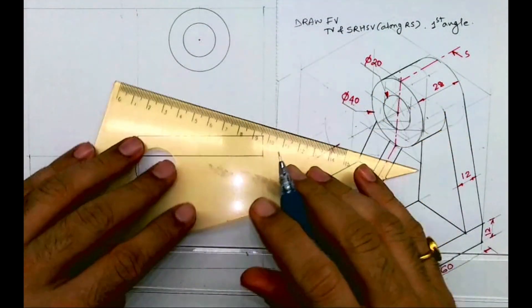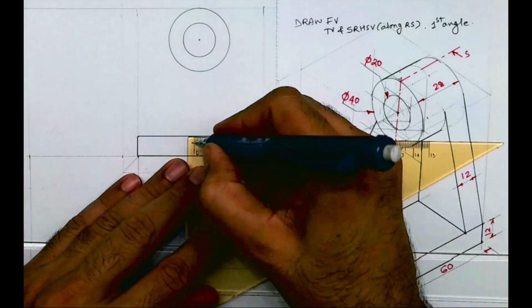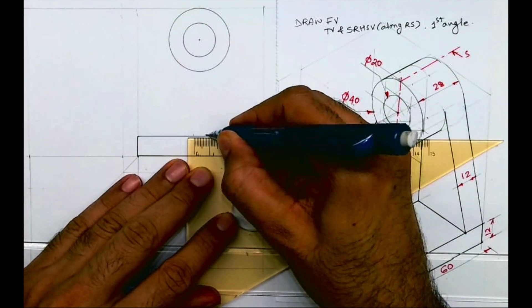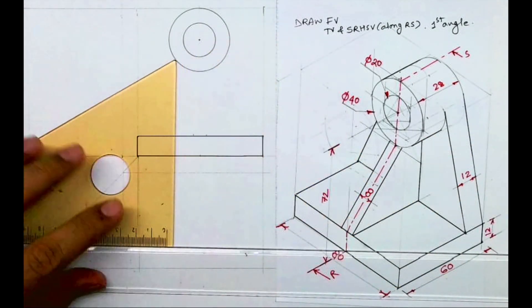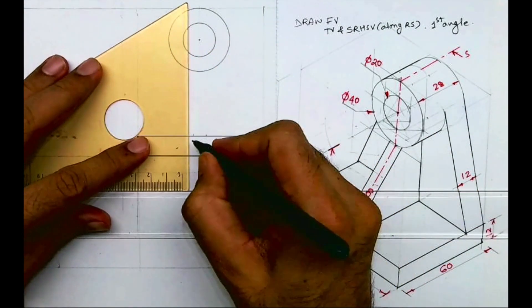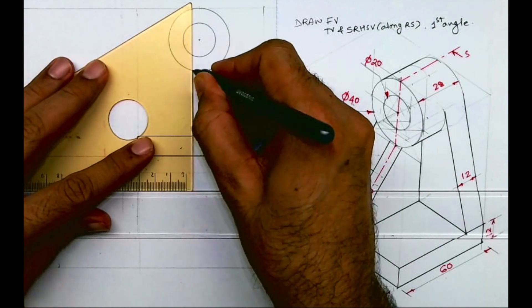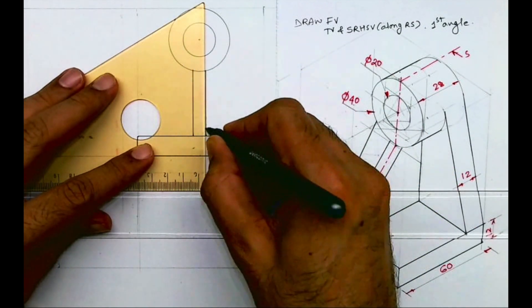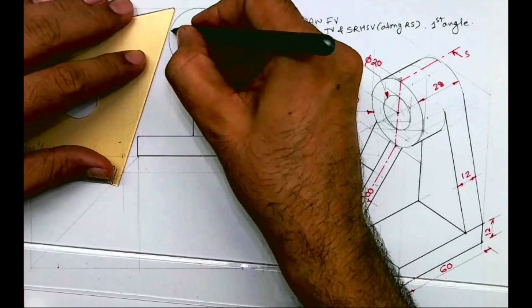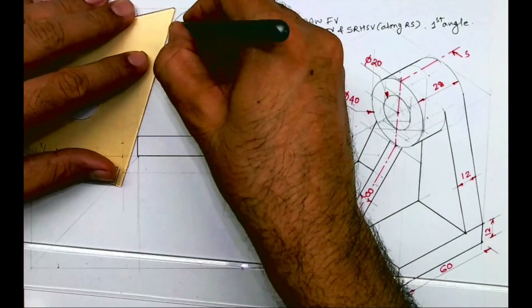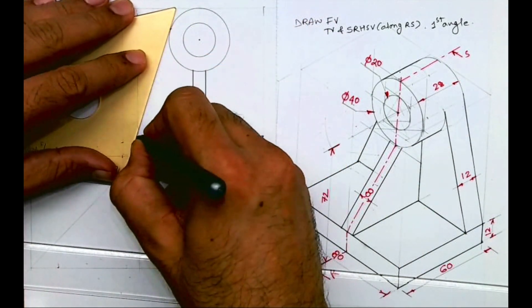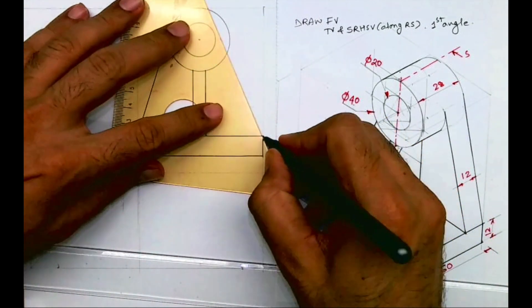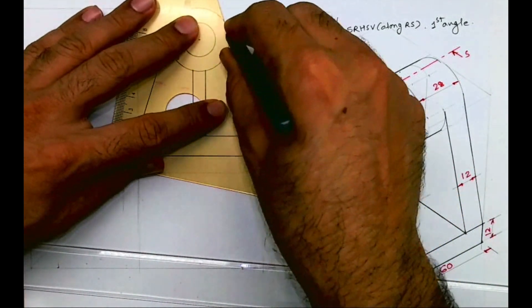After drawing these two circles we'll again take the midpoint and take 44 mm on both sides to draw that front rectangle part. Then we'll draw the tangent — it's a rib, so we draw the tangent like this. We are done with the front view.